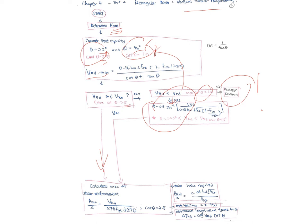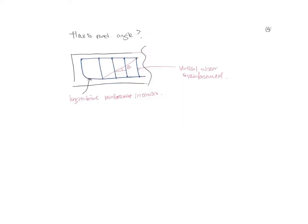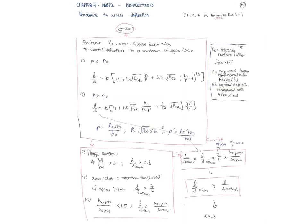After checking VRd, calculate the area of shear reinforcement: Asw/s = VEd / (0.78·fyk·d·cot θ), where cot θ = 2.5 for θ = 22°. The minimum link requirement is Asw/s = 0.08·√fck·bw / fyk. Maximum spacing is 0.75d. The additional longitudinal tension force is 0.5·VEd·cot θ.